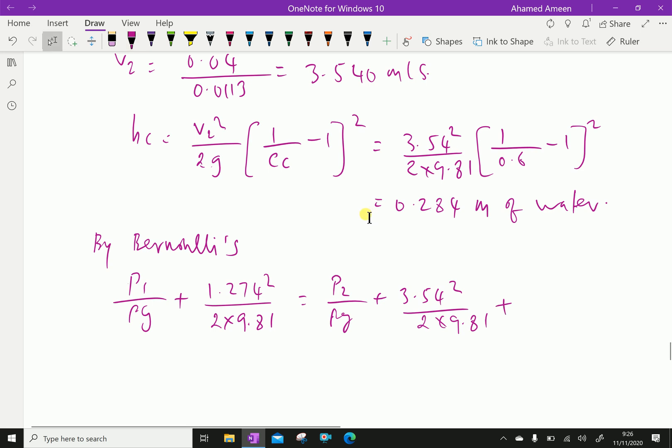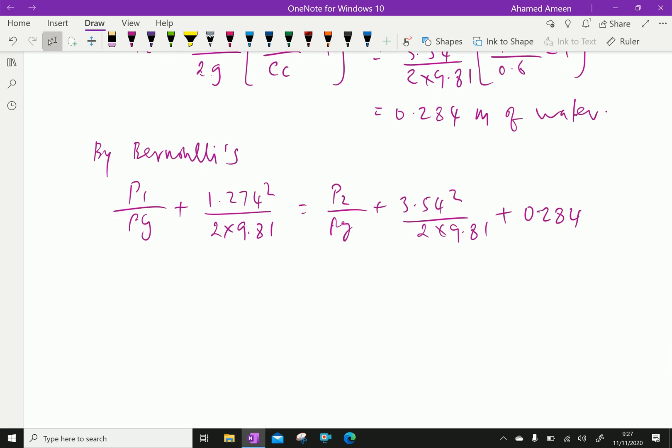Loss Hc equals 0.284 meter of water. Here we are applying the values, P1 by rho G plus 1.274 square over 2 into 9.81 is 0.083 equals 0.639, 0.639 plus 0.284.